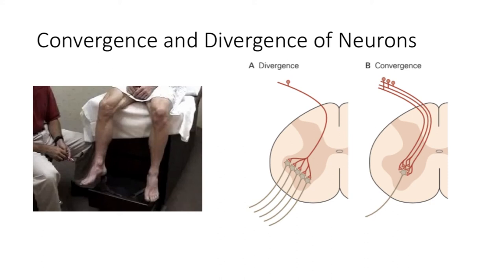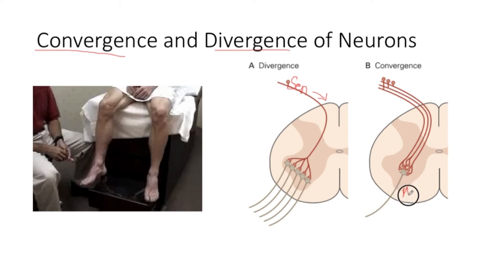In this entire reflex system, we have also seen two interesting phenomena — convergence and divergence of neurons. When sensory neurons are bringing the signal, they actually put it into many neurons — this is divergence. On the other hand, when the signal comes through the motor neuron after divergence, there is a convergence of signal happening. So in any reflex action, there is both convergence and divergence of neurons taking place.